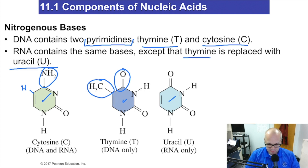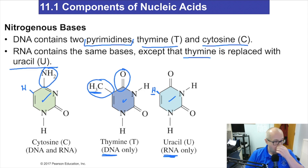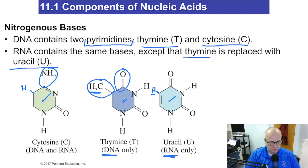Here's uracil — it's in RNA only. Thymine is in DNA only. Notice the structural difference: they're essentially the same, except uracil is missing the methyl group. Everything else is the same. These are your pyrimidines — they have one ring. The purines have two rings.